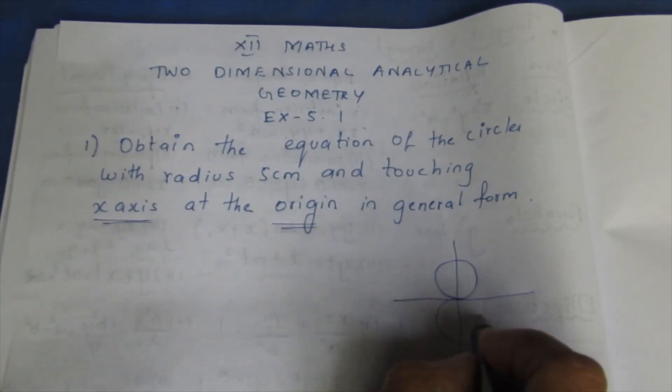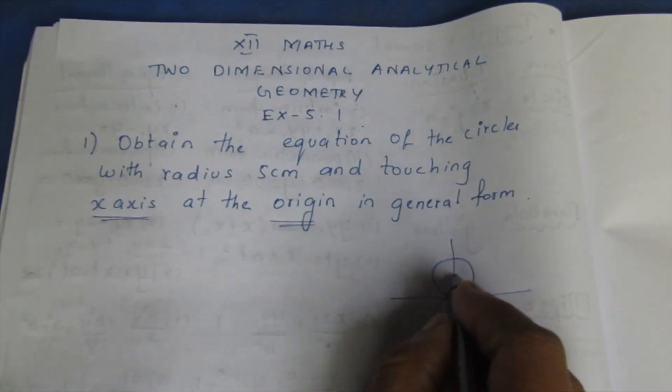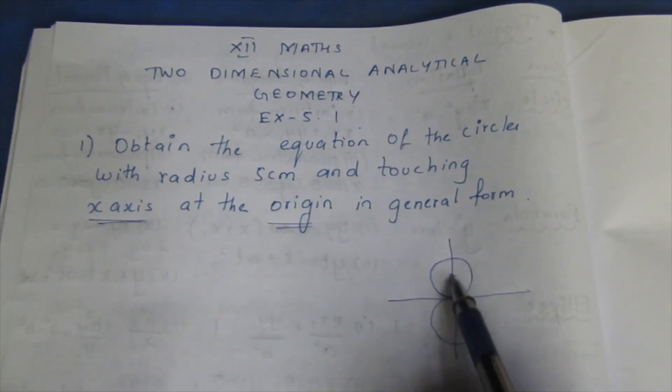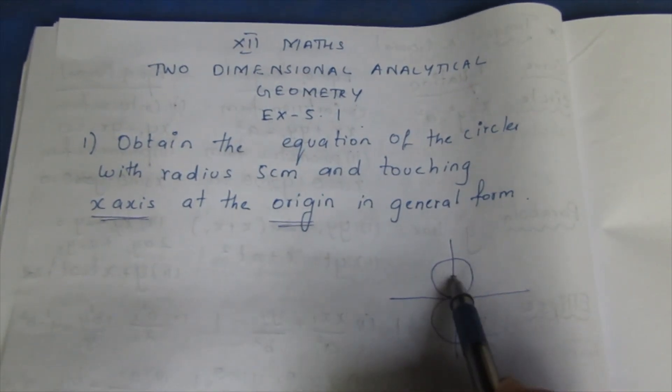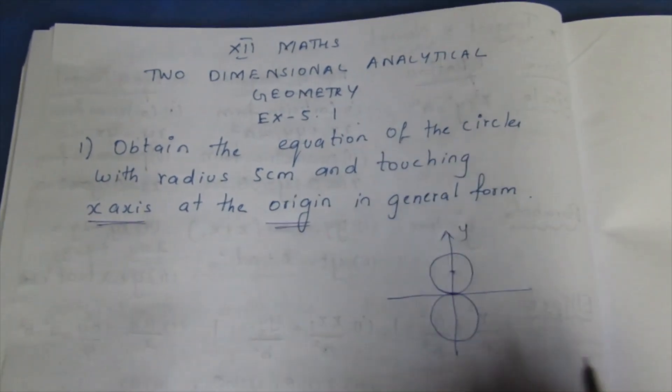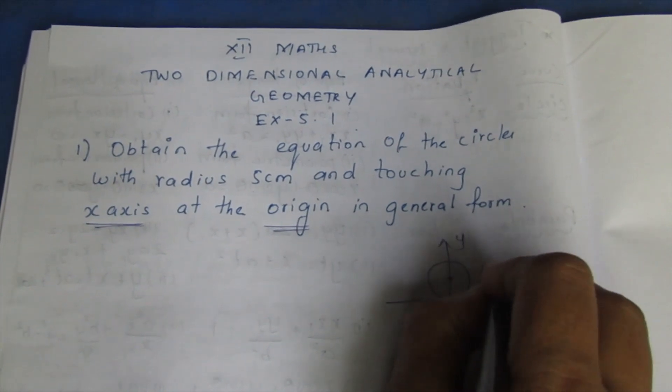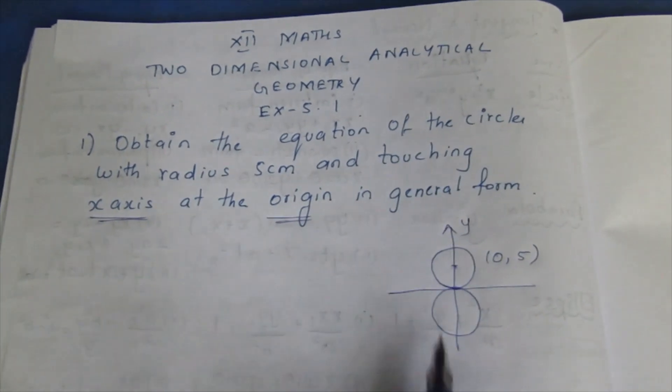Here is a circle. The origin is touch. Here is 5 cm radius. Here is 5 cm. Here is y-axis. Here is 0,5. Here is y-axis.